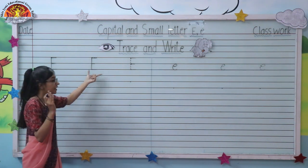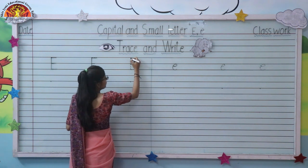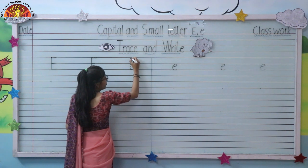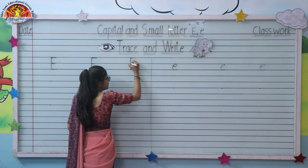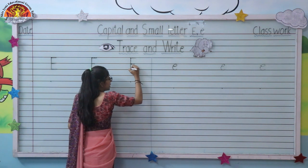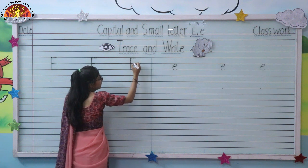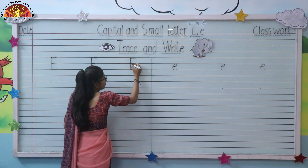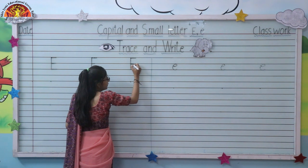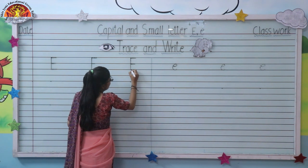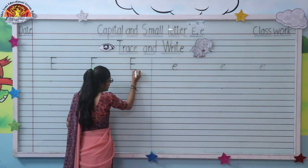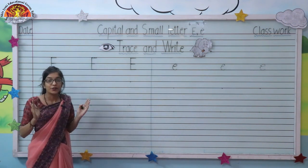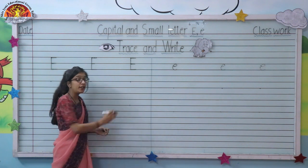Capital letter E. Again kids — put your pencil on the first line. Make one standing line, touch the lines properly. Then sleeping line, small sleeping line on the second line, one more sleeping line on the third line. Capital letter E.